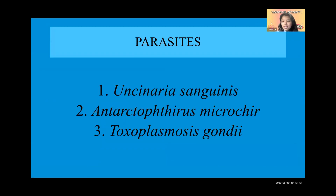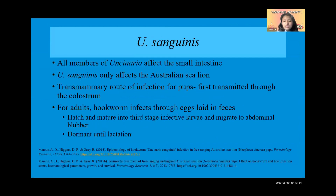The Australian sea lion is affected by a myriad of parasites, but the three we decided to study in this review are Uncinaria sanguinis, Antarctophthirus microchir, and Toxoplasma gondii. To start: Uncinaria sanguinis.